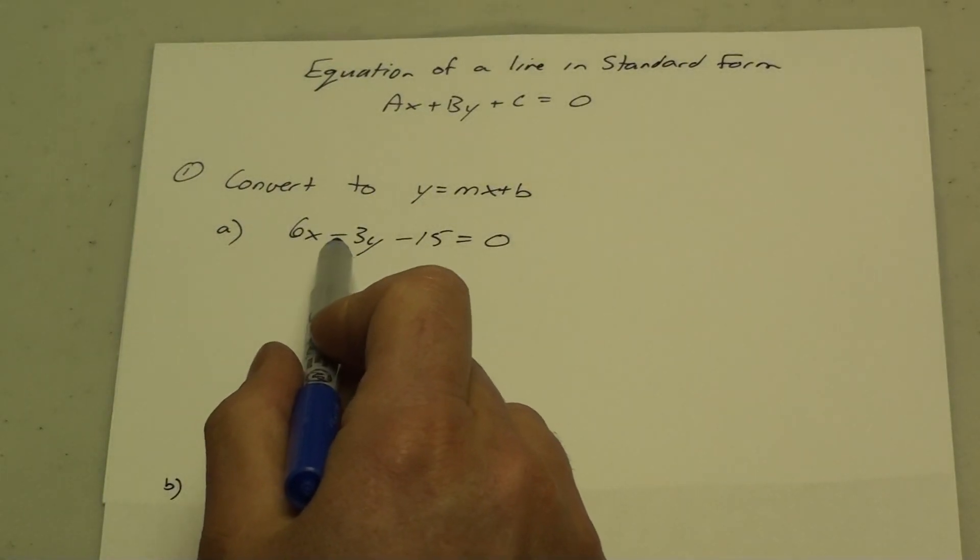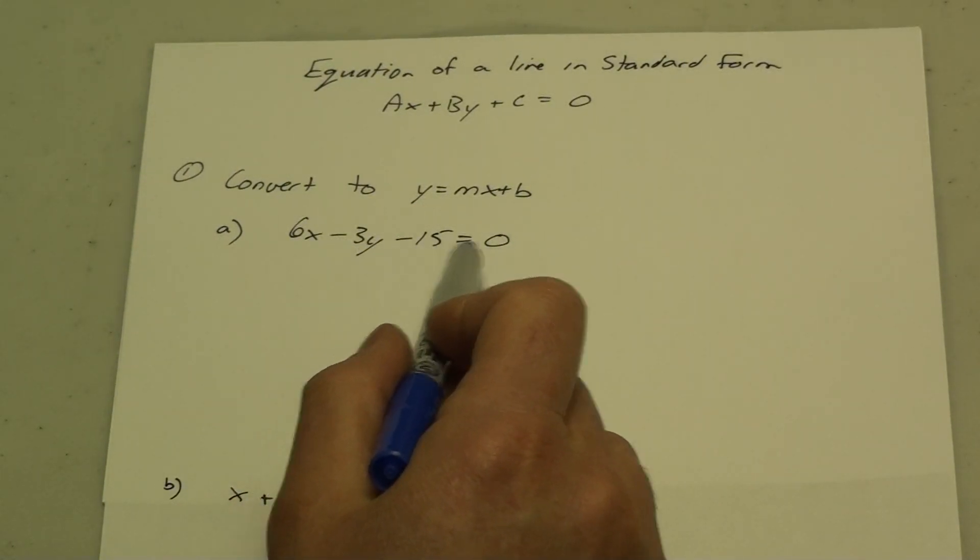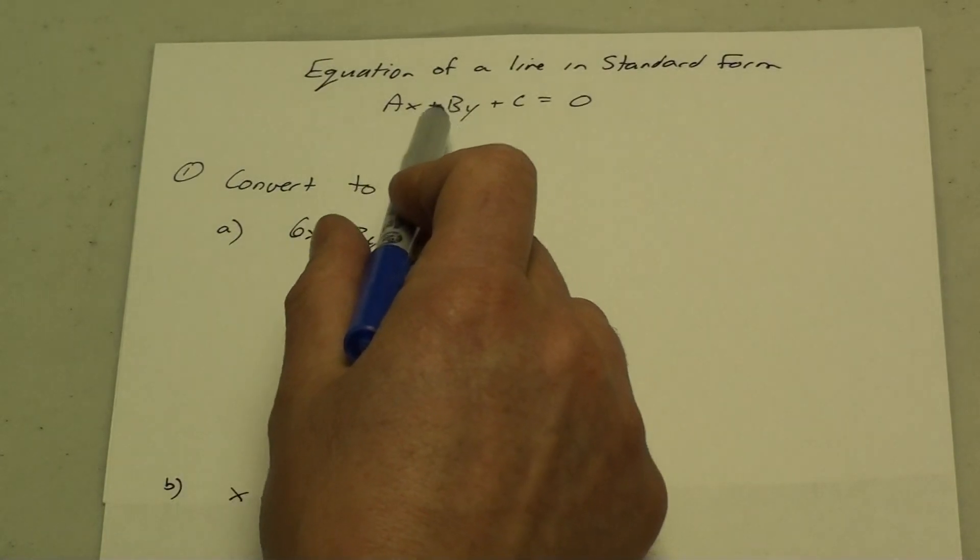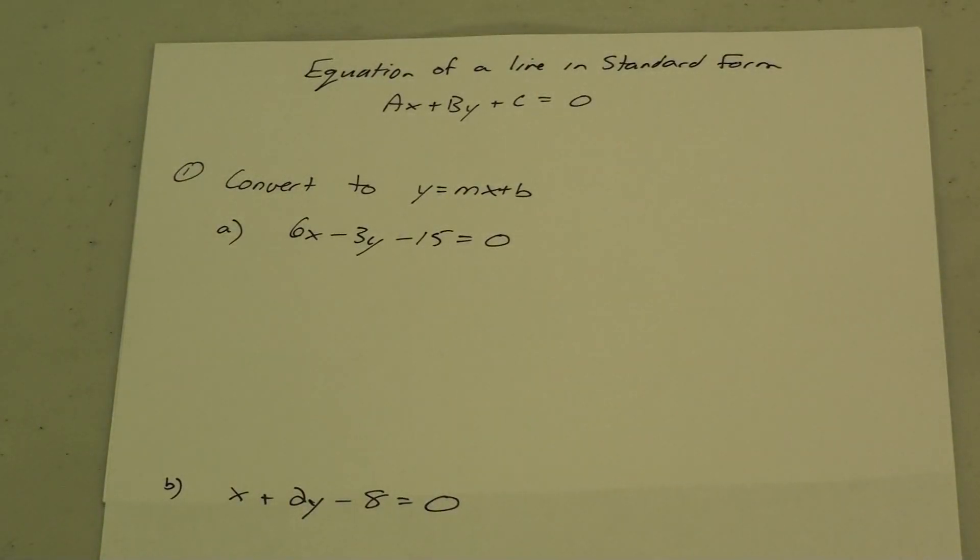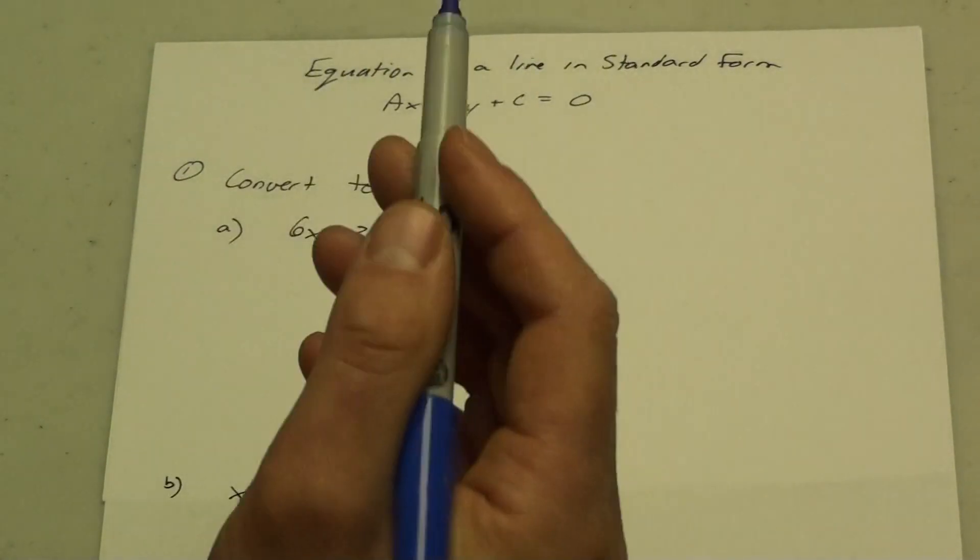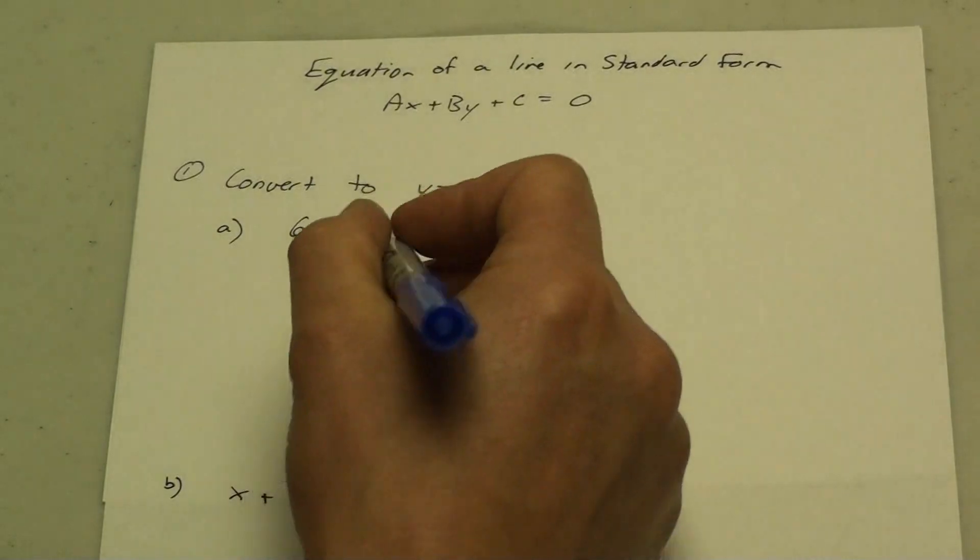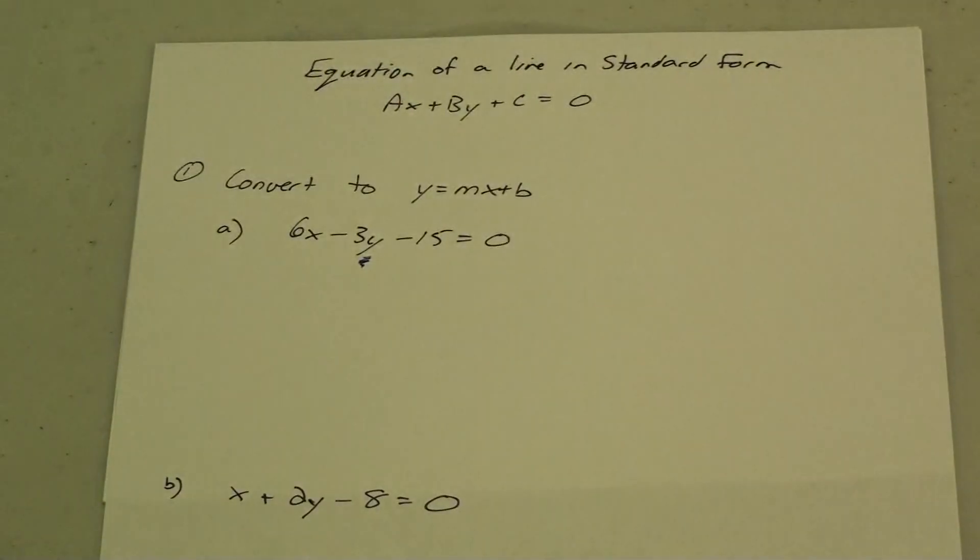If I have 6x minus 3y minus 15 equals zero, it goes ax plus by plus c equals zero. That is called standard form. If I want to put it into slope y-intercept form, I need to get the y by itself. So I want to start moving things to the other side.